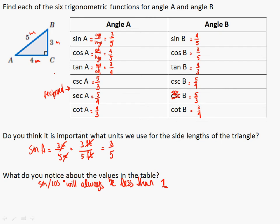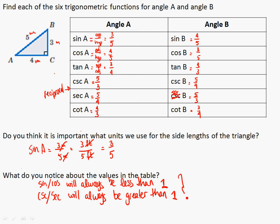Because the sine and cosine will always be less than 1, their reciprocals — the cosecant and secant — will always be greater than 1. This relates to the range of the sine and cosine functions, which we'll revisit in a later chapter.